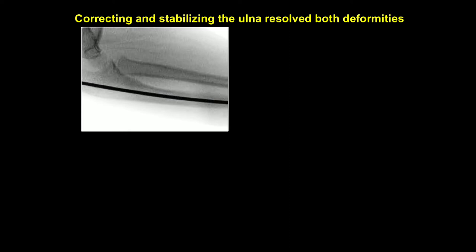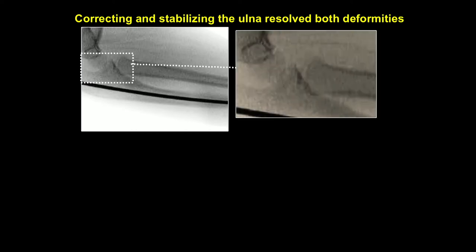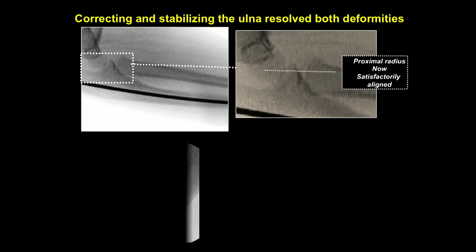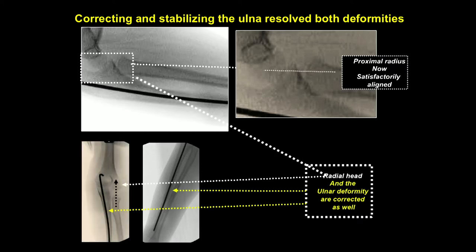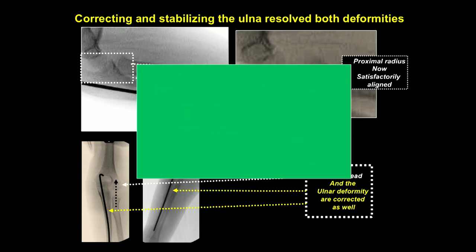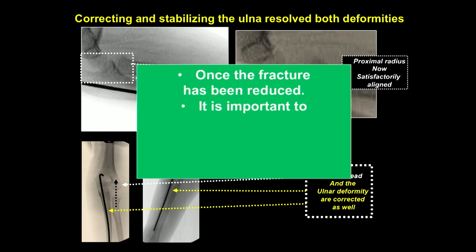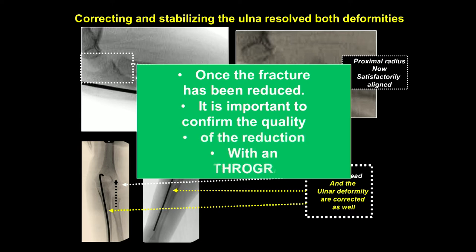How are you going to correct and stabilize it? First thing — reduce the ulna. This one seemed a little bit unstable for angulation, so a pin was placed down there. That seemed to actually reduce the radial head satisfactorily, though it may still be just slightly anterior. The radial head and ulnar deformity appear corrected. Once you correct the ulna and recognize this as a type 2 lesion, it's very important to confirm the quality of your reduction with an arthrogram.